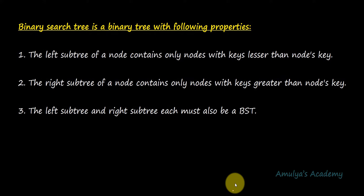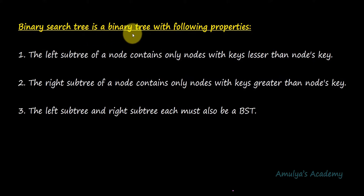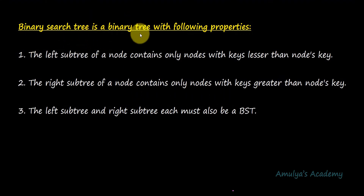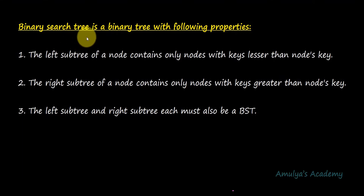Let's analyze this definition. Firstly, binary search tree is a binary tree, meaning in a binary search tree every node can have at most 2 children — every node can have 0, 1, or 2 children. So here also every node can contain at most 2 children.